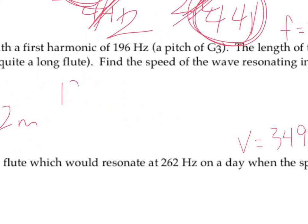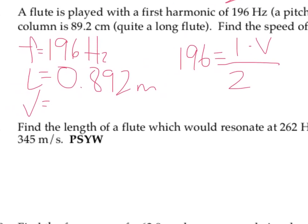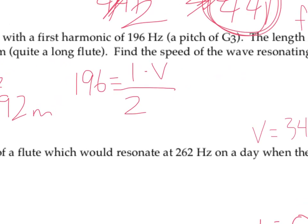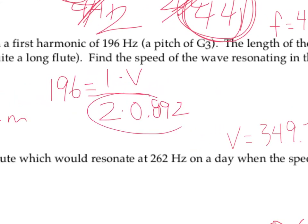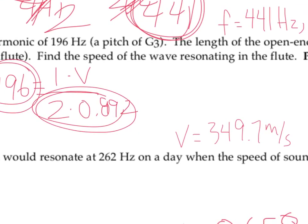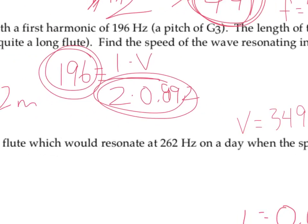So if we go back to our equation, frequency, 196, equals n, which is 1 for the first harmonic, times v, which is the variable we're solving for, divided by 2 times the length of our flute, 0.892 meters. So we're going to multiply by the bottom of our fraction here, times our 196. We'll divide by 1 if you want to, but you don't really need to, of course. You should end up with the velocity here of 349.7 meters per second.